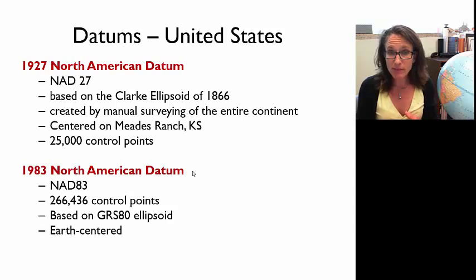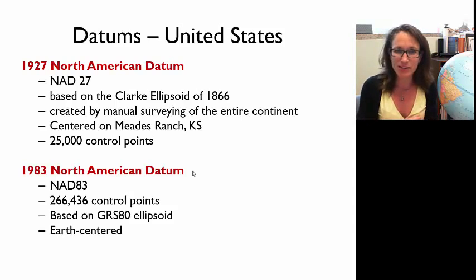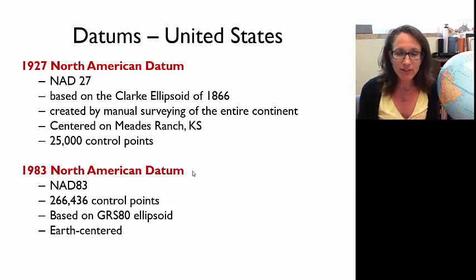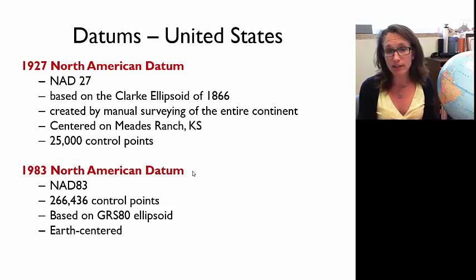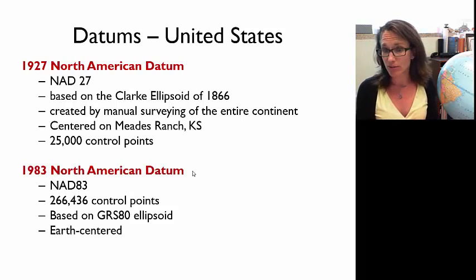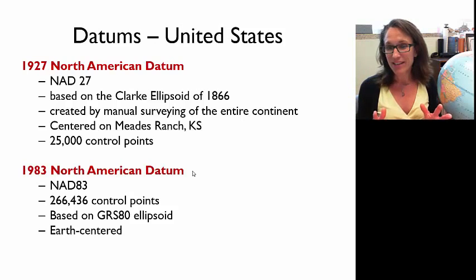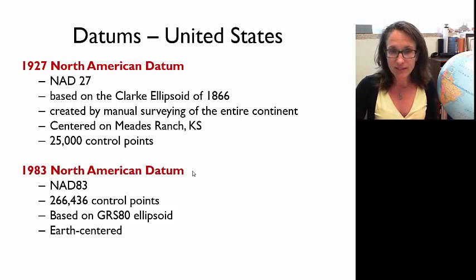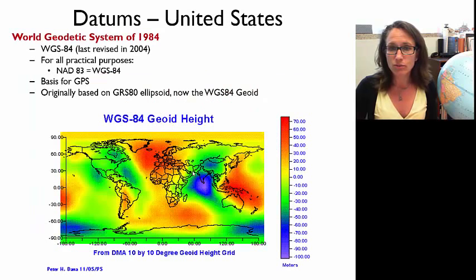There are three main datums used in the US. The first two are the North American Datum of 1927 and the North American Datum of 1983 — NAD 27 and NAD 83. NAD 27 is what old USGS topo maps are referenced to. It's an older system and not used as much now, but there's still a lot of data out there referenced to NAD 27. The newer NAD 83 is more robust and essentially equivalent to the WGS 84 datum.